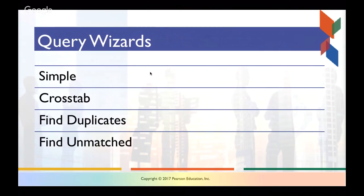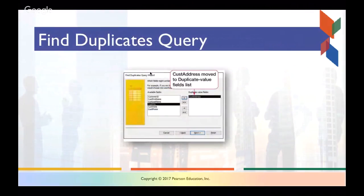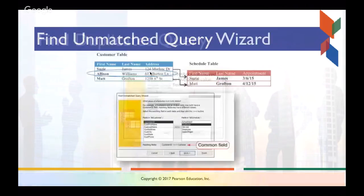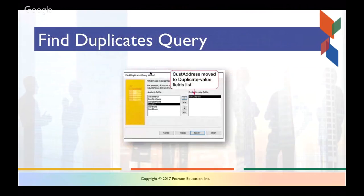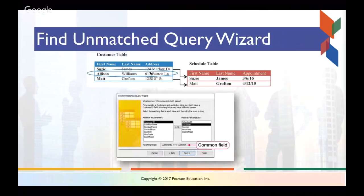One of the easiest ways to generate a query is using the query wizard in Access. You don't have to type any special language, and it guides you through a number of different steps to develop basic to intermediate levels of complexity. But for anything more specific, you have to go in and design it yourself. You have a couple different types of queries: simple queries, cross-tab queries, finding duplicates, and finding unmatched queries. The wizard shows you how to select fields and whether or not you want to find duplicates or unmatched and matched fields.